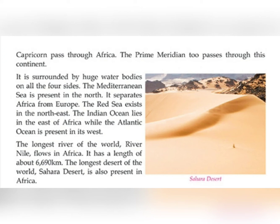The longest river of the world, River Nile, flows in Africa. It flows in Africa and is the longest river, with a length of about 6,690 kilometers.